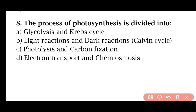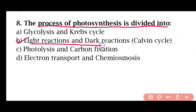Question 8: The process of photosynthesis is divided into — glycolysis and Krebs cycle, light reaction and dark reaction, photolysis and carbon fixation, or electron transport and chemiosmosis. The correct answer is option B. Photosynthesis has two reactions: light reaction and dark reaction.